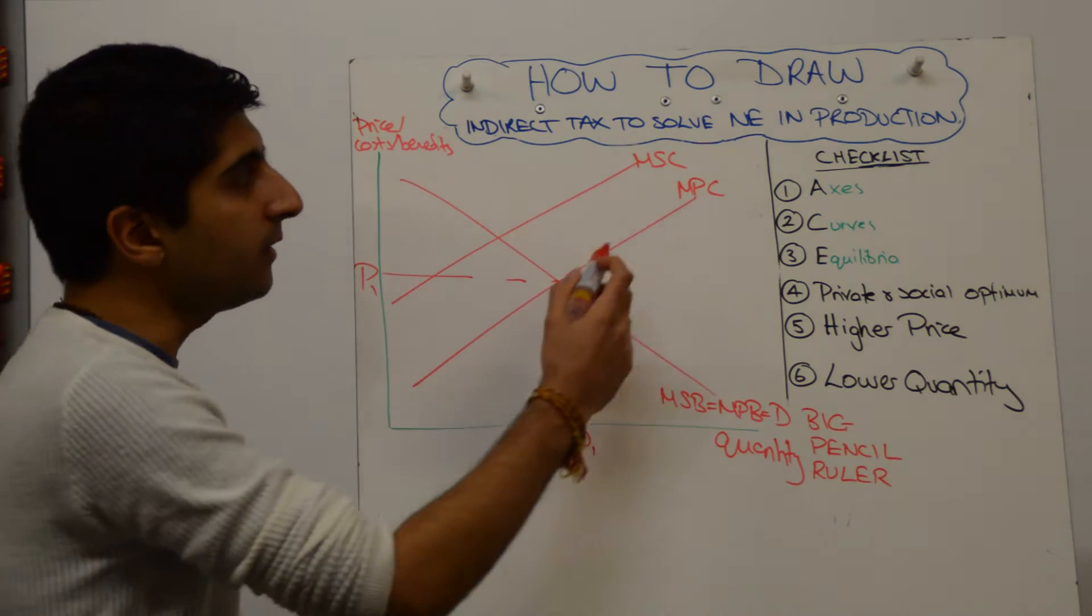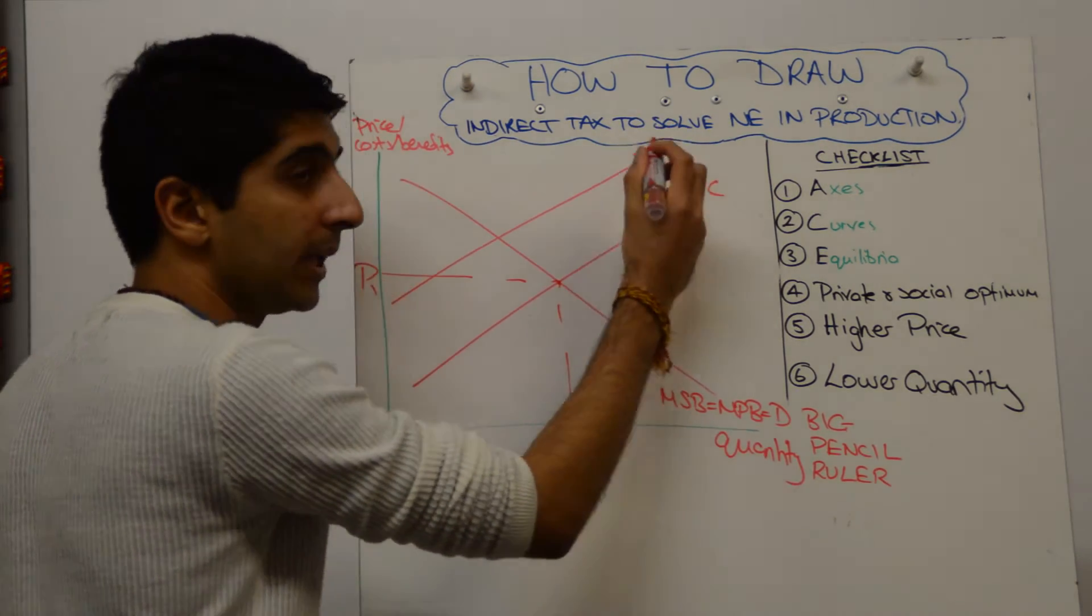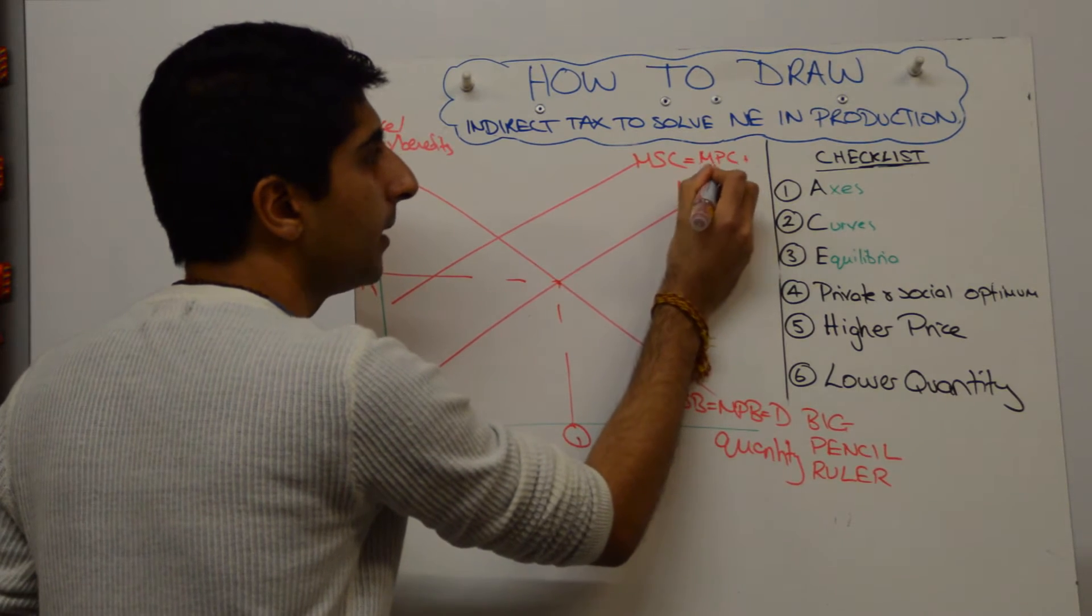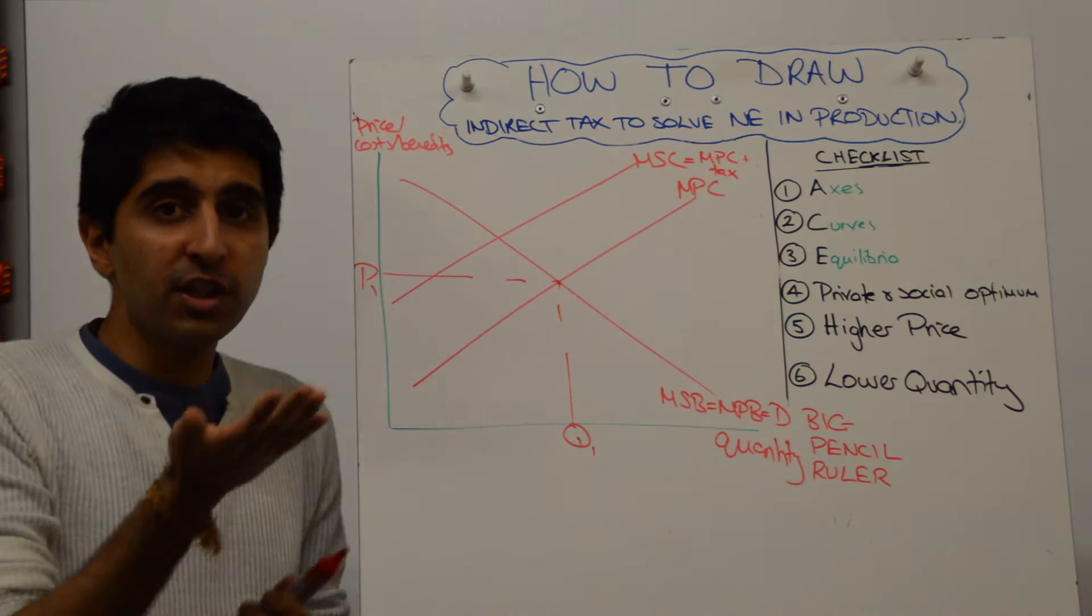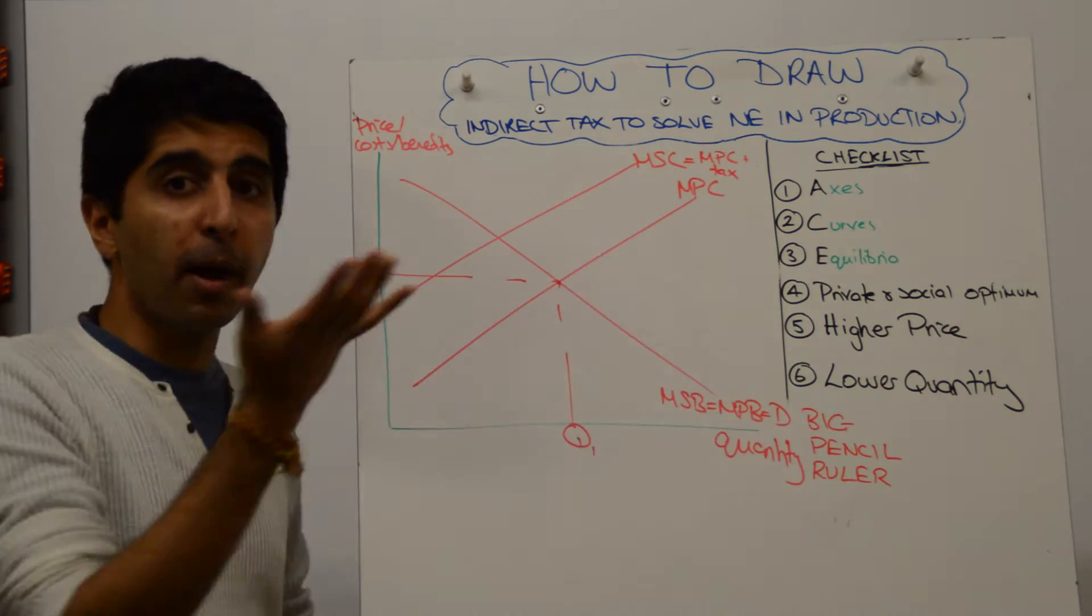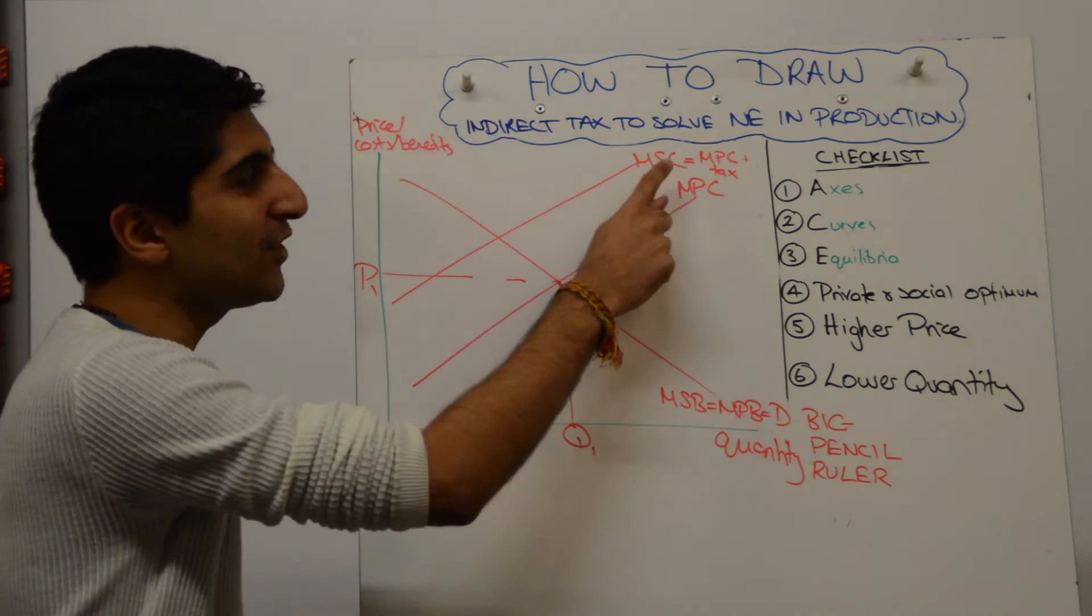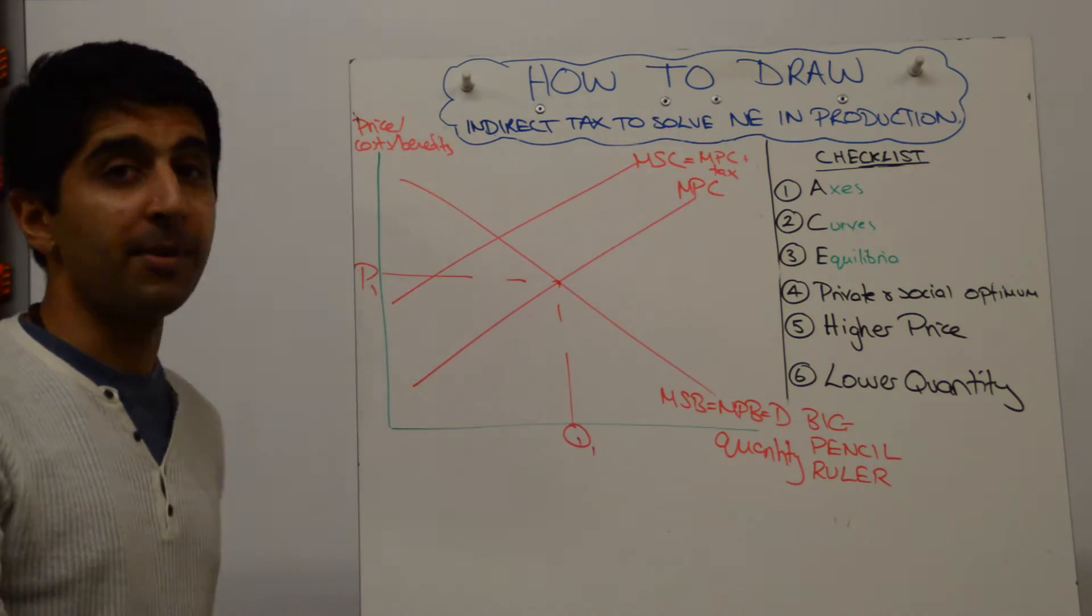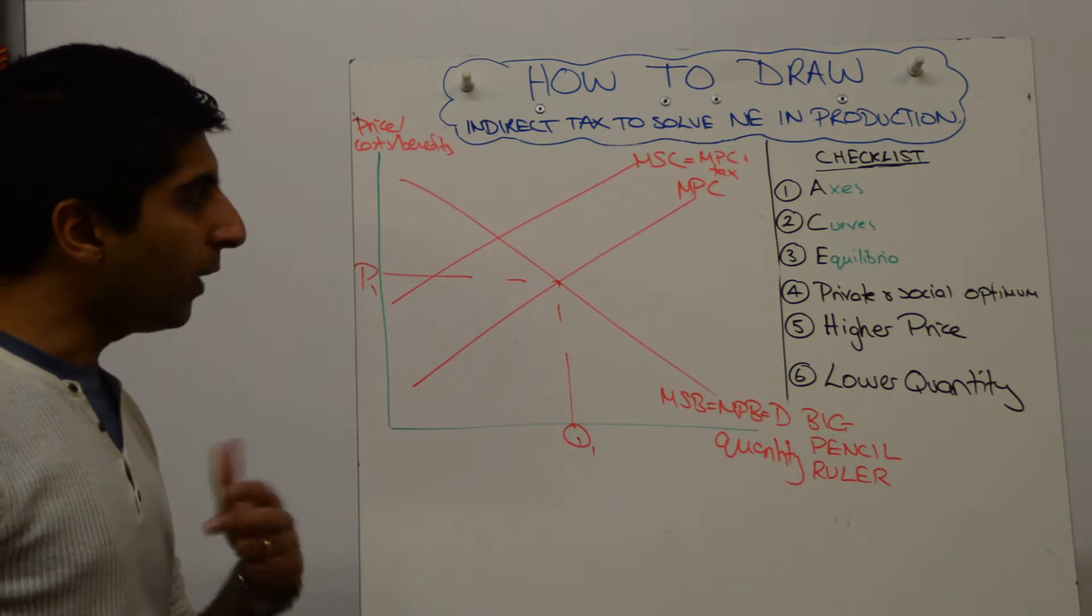Which means that the MSC curve, because of the tax now being levied, is going to equal, let's call it MPC plus tax. So basically the tax now has shifted the MPC curve upwards perfectly to equal MSC. That's all you need to do. That's the only addition you need to put on this diagram to show that now a tax has been imposed here, maybe a carbon tax, if there is a negative externality in production.